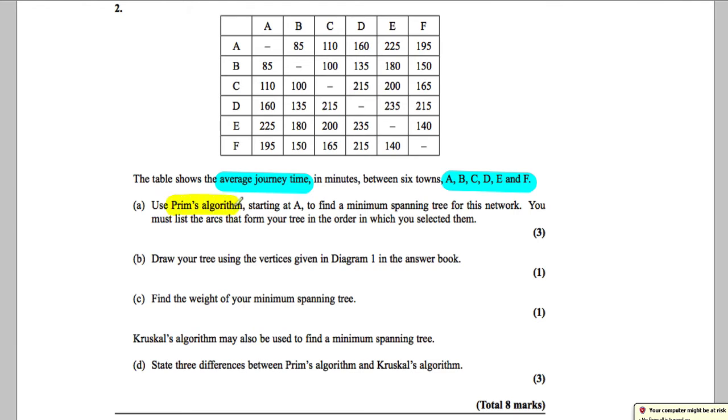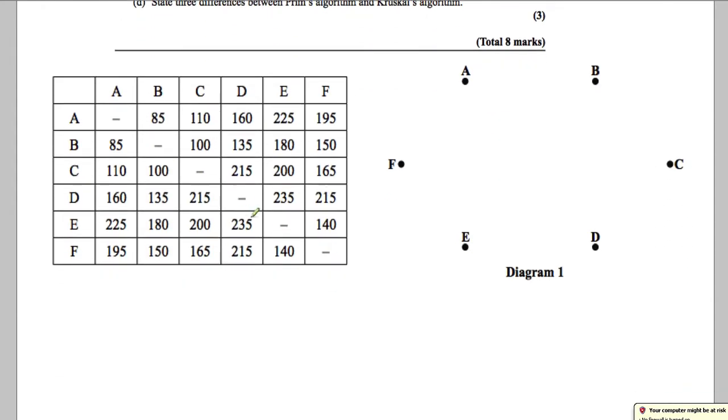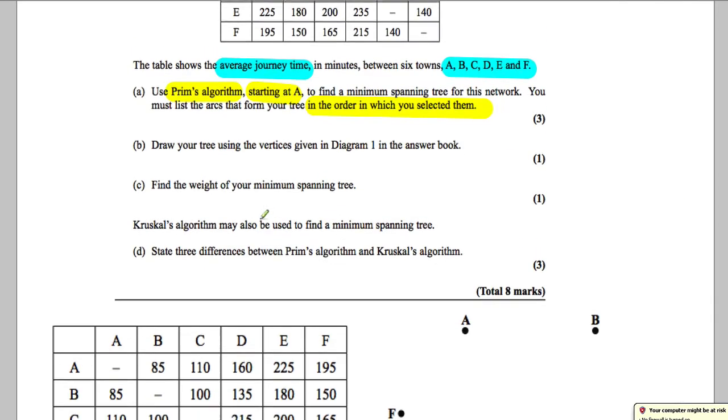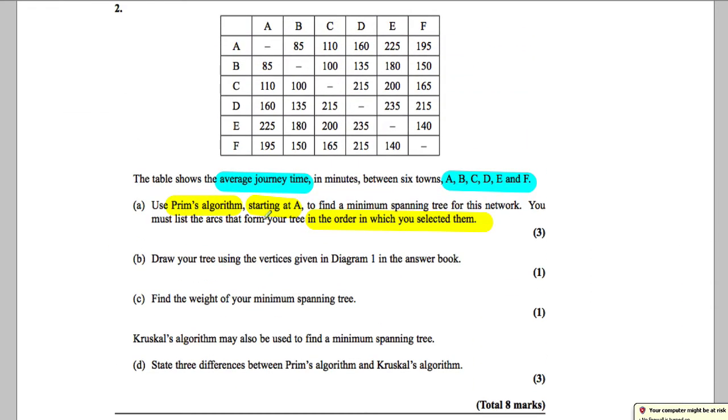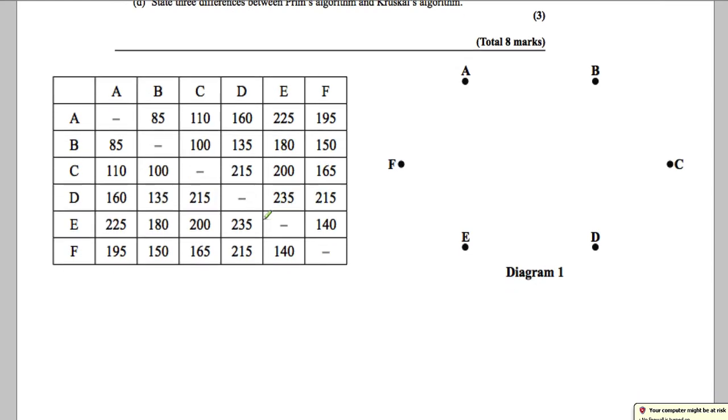It says using Prim's algorithm starting at A, you must start at A, find the minimum spanning tree for the network. You must list the arcs that form your tree in the order in which you selected them. Now if you look in your answer booklet, they give you a copy of this matrix. So we're going to do Prim's via the matrix method because we don't have a picture for it at the moment.